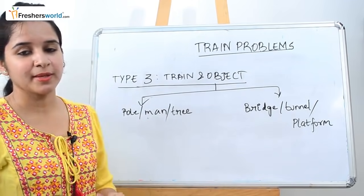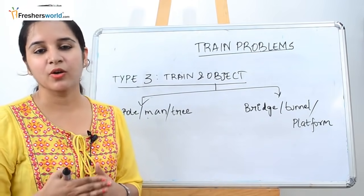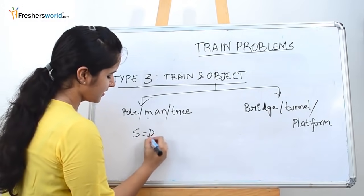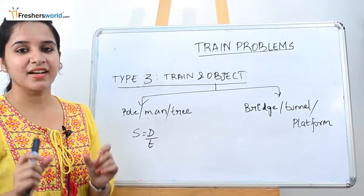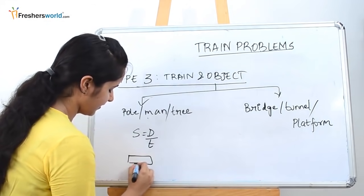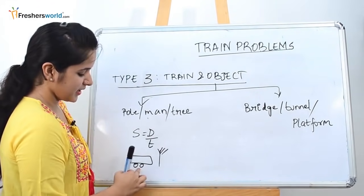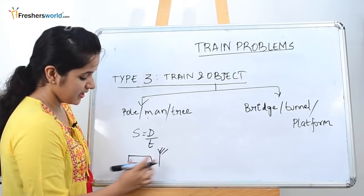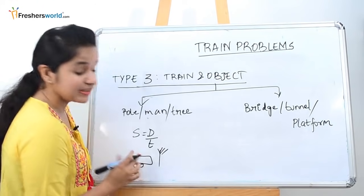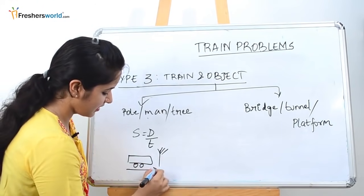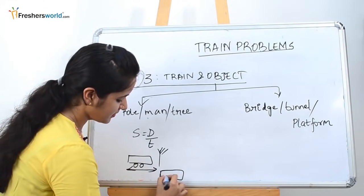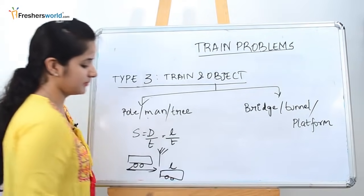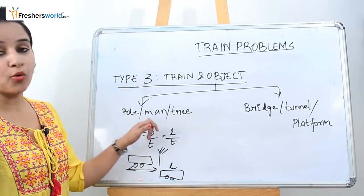Let's look at a train crossing a pole, man, or tree. The formula is speed = distance/time. The distance covered by the train to cross a tree is the length of the train itself. The train has completely crossed the tree when the back of the train passes it — so it must cover its full length. Therefore: speed = length of train / time taken.